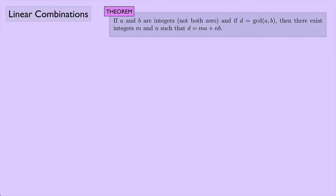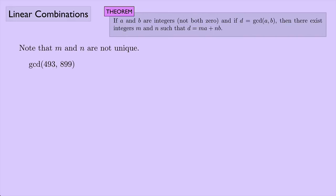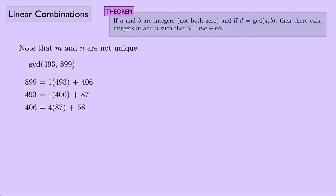The theorem guarantees m and n exist, but they are not unique. Here's an example: the greatest common divisor of 493 and 899. Using the Euclidean algorithm: 899 equals 1 times 493 plus 406; 493 is 1 times 406 plus 87; 406 is 4 times 87 plus 58; 87 is 1 times 58 plus 29; and 58 is 2 times 29 with remainder 0. So 29 is the greatest common divisor.